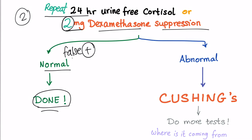What are the causes of a false positive in this setting? They include obesity, stress, depression, estrogen, and phenytoin — also known by the trade name Dilantin. All of these can cause a false positive test result.